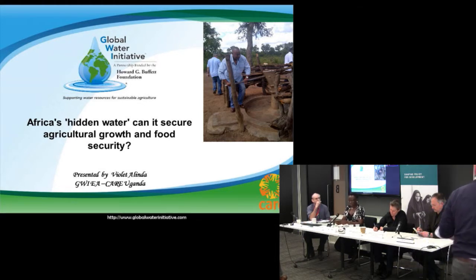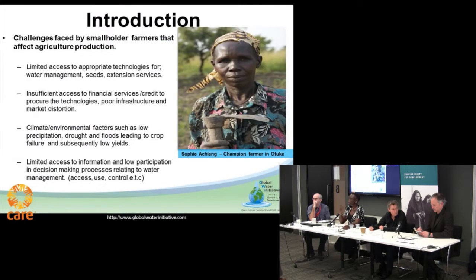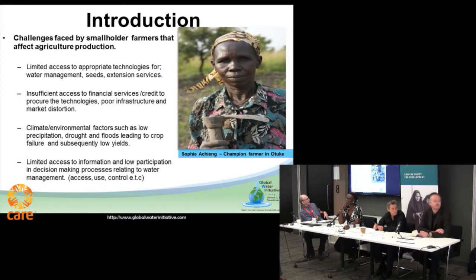Looking at that slide, I wanted to look more at the smallholder farmers. In the background is that lady — she's Sophia Cheng, a smallholder farmer coming from the northern part of the country. Taylor has just talked about the north; they have bimodal rain. Those are the challenges she faces.